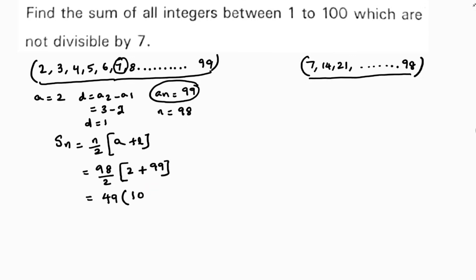98 by 2 is 49. 2 plus 99 is 101. So 49 times 101 is 4949. This is the sum of all the numbers from 2 to 99.